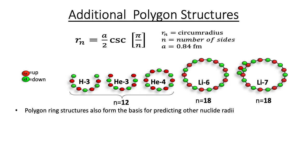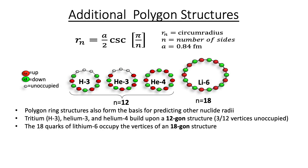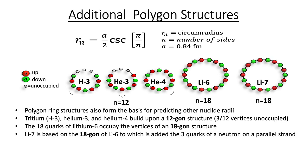Polygon ring structures also form the basis for predicting other nuclide radii. Tritium, helium-3, and helium-4 build upon a 12-gon structure. Note that three of the 12 vertices are unoccupied for tritium and helium-3. The 18 quarks of lithium-6 occupy the vertices of an 18-gon structure, and lithium-7 is also based on an 18-gon structure, to which is added the three quarks of a neutron on a parallel strand.